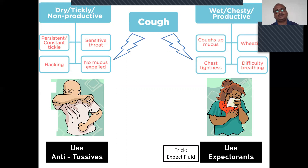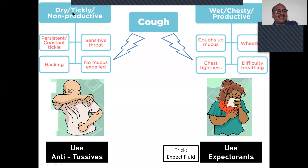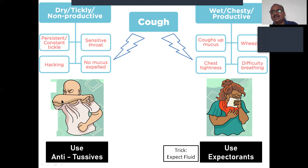Cough is of two types. Dry cough — also called a tickly cough — is also called a non-productive cough, because here there is no mucus coming out. Wet cough is also called a chesty cough, and it is productive because mucus is produced and comes outside through the mouth and nose. For wet cough, you need a handkerchief; for dry cough, covering with your elbow is enough. Use expectorants for wet cough and antitussives for dry cough.